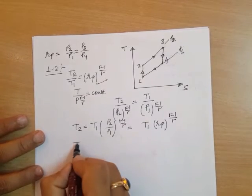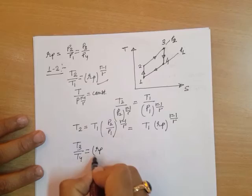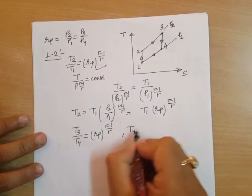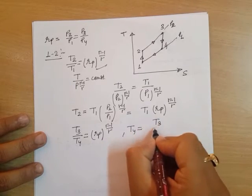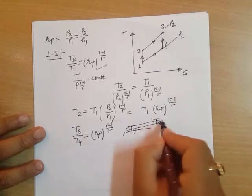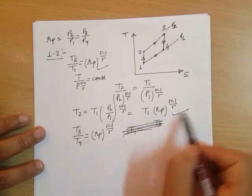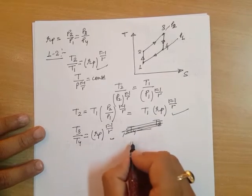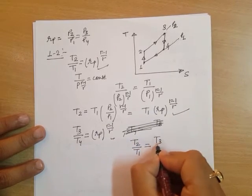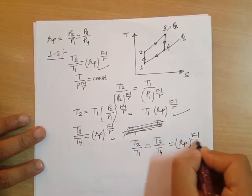Likewise, for the isentropic expansion 3 to 4, T3/T4 = RP^((γ-1)/γ). Comparing the two isentropic relations, we find that T2/T1 = T3/T4 = RP^((γ-1)/γ).